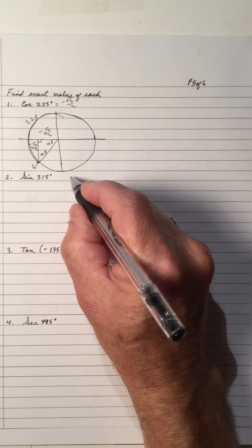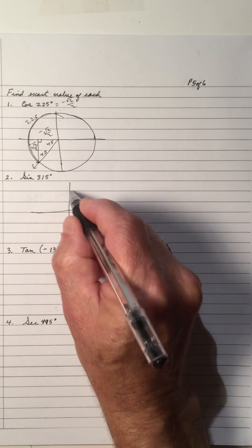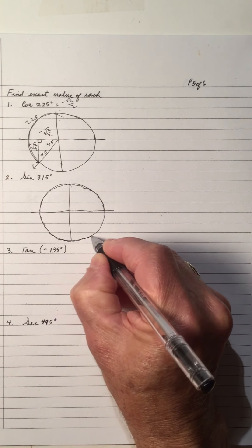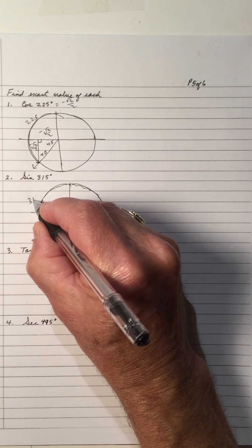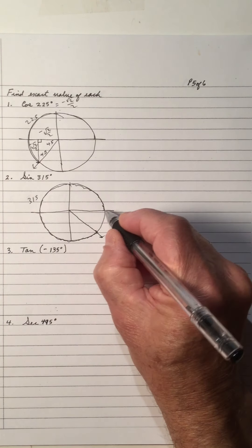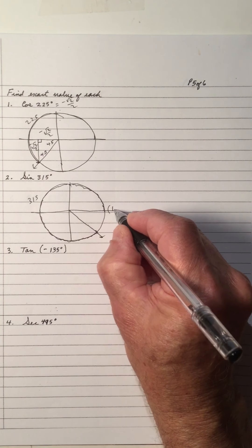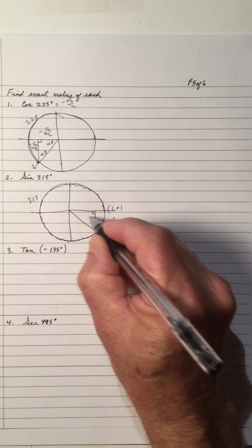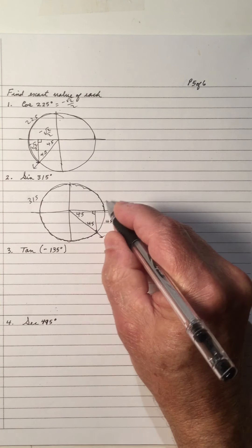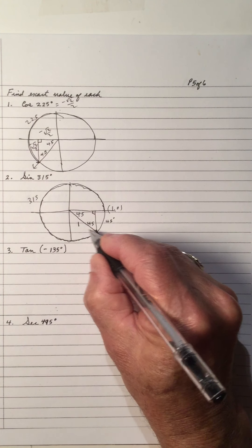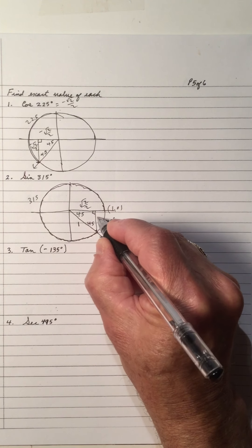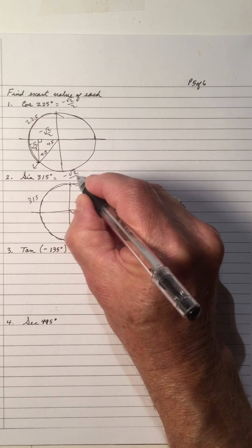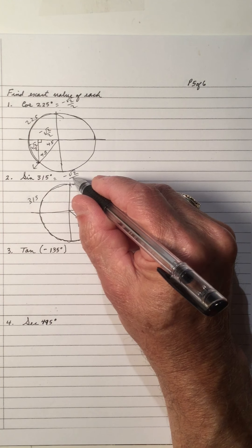What about sin 315°? Draw a circle, rotate 315 degrees — that's 90, 180, 270, and right to here. The terminal arm goes out, perpendicular drops to the x-axis. We're on the unit circle with radius 1, so this point is (1, 0). The arc here is 45°, so the reference angle is 45°, both angles are 45°. The sides are root 2 over 2 — x is positive, y is negative. So sin 315° = −root 2/2. Check with your calculator: that should be −0.707.